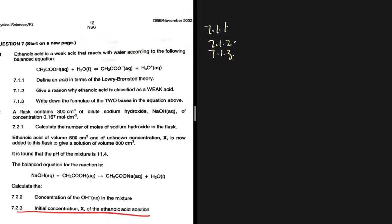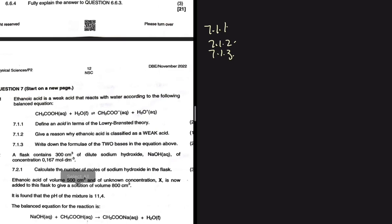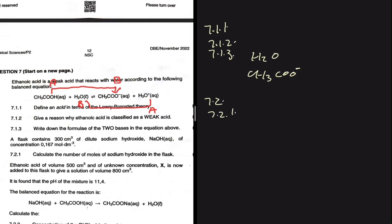7.1.3 asks us to write down the formula of the two bases in the equation. Let's use the conjugate acid-base pair approach. CH₃COOH is the acid, so CH₃COO⁻ is the conjugate base. H₂O is the base, and H₃O⁺ is the conjugate acid. So the two bases are H₂O and CH₃COO⁻.